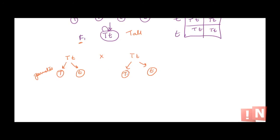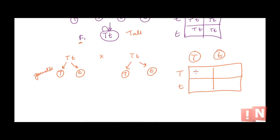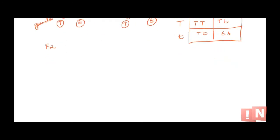From two heterozygous F1 plants, the gametes can combine as: capital T with capital T, capital T with small t, small t with capital T, or small t with small t. So in the F2 generation, the genotypes we get are: one homozygous TT, two heterozygous Tt, and one homozygous recessive tt — giving a genotype ratio of 1:2:1.